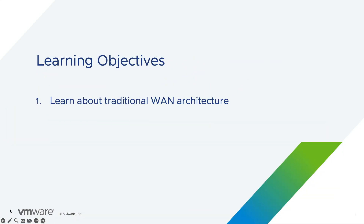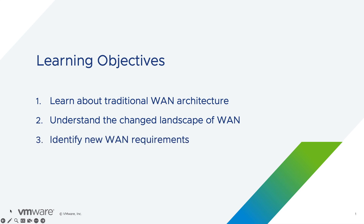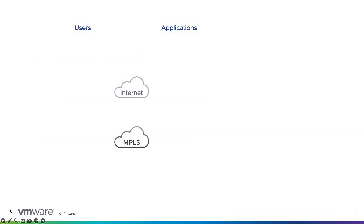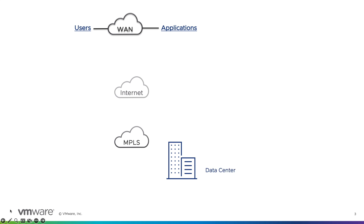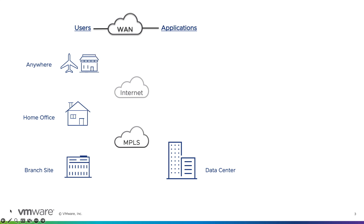Welcome. In this module you'll understand the traditional wide area network, or WAN, architecture. You'll understand the changing landscape of the WAN, and you'll also get to know some newer WAN requirements. Enterprises use a wide area network to connect their users and their applications. Applications were traditionally in an on-premise data center, and users were at branch offices, headquarters, or sometimes at home offices.